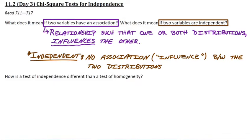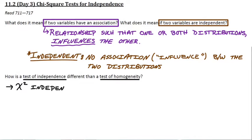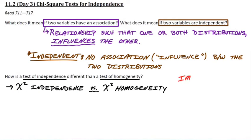This chi-square test for independence is actually pretty similar to the test for homogeneity. But we have to figure out what the differences are and how to tell them apart. The question is: do we have a chi-square test for independence or a chi-square test for homogeneity? This is an important distinction.